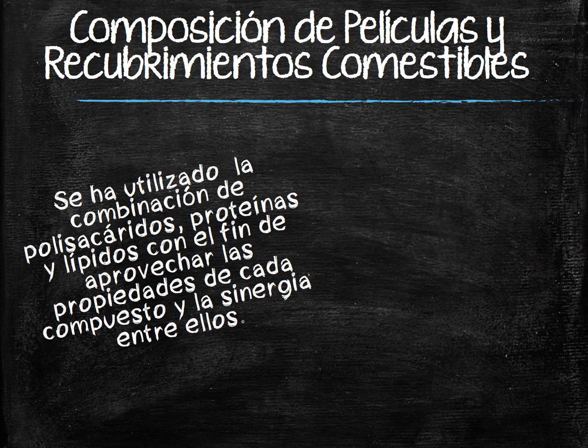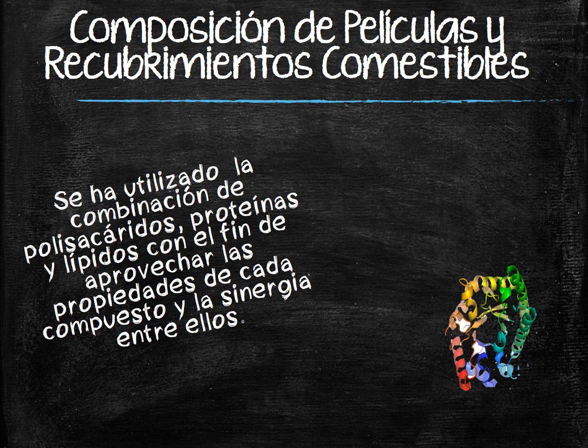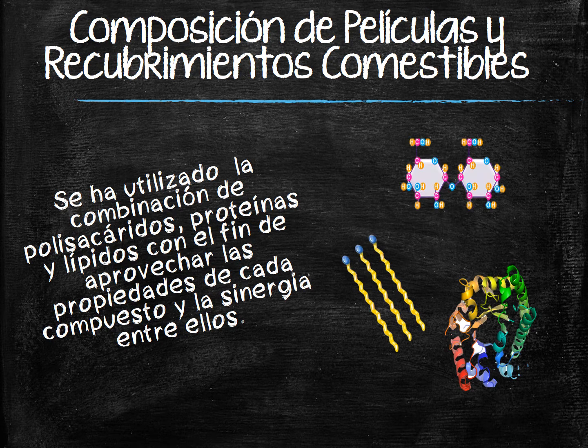In some recent studies, the production of edible and biodegradable films by combining various polysaccharides, proteins, and lipids is considered, with the aim of taking advantage of the properties of each compound and the synergy between them. The mechanical and barrier properties of these films depend not only on the compounds used in the polymer matrix, but also on their compatibility.